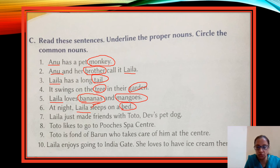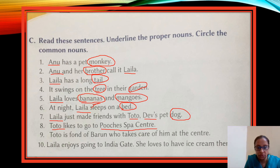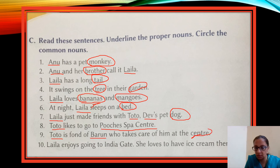Sentence 7: 'Laila just made friends with Toto, Dev's pet dog.' Laila — proper noun. Toto — proper noun. Dev — proper noun. Dog — which dog? No name given — common noun. Sentence 8: 'Toto likes to go to Pooch's Spa Center.' Toto — proper noun. Pooch's Spa Center — a particular place name — proper noun. Sentence 9: 'Toto is fond of Barun who takes care of him at the center.' Toto — proper noun. Barun — proper noun. Center — which center? Not specific — common noun.